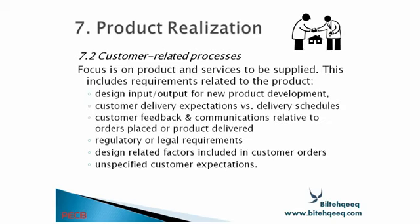Customer related processes, section 7.2, focuses on products and services to be supplied. This includes requirements related to product, design input and output for new product development, customer delivery expectations versus delivery schedule, customer feedback and communication relative to orders or product delivered, regulatory or legal requirements, design related factors included in customer orders, and unspecified customer expectations. You have to understand what the customer is expecting and develop your product according to their requirements. If there is any flaw in understanding customer requirements, you cannot fulfill their expectations.